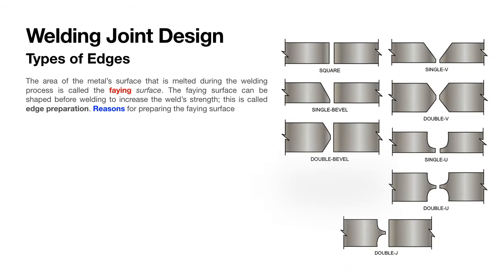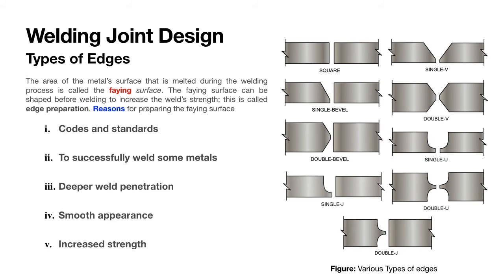So basically when we are welding two materials, the surfaces which are to be joined or welded are called a faying surface. And there can be some preparations which can be carried out on the surface — we can prepare the edges which we are going to weld. The reasons for preparing those edges is that sometimes we want to increase the strength of the weld, sometimes we want deeper penetration, smoother appearance, etc.